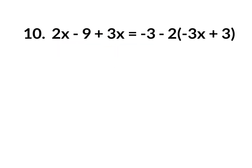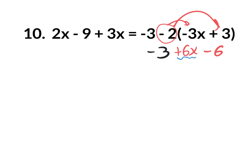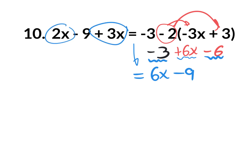Next, simplify each side. Distributive property and/or combining like terms. On the right side there is distributive property: negative 2 times negative 3x is positive 6x, and negative 2 times positive 3 is negative 6. Bring down the minus 3, and combine like terms — the minus 3 and the minus 6 become minus 9. That's the simplified right side. On the left side, no distributive property, but combine 2x and 3x for a total of 5x, and bring down the minus 9. Now get x by itself — I have x's on both sides, so subtract 5x from both sides.